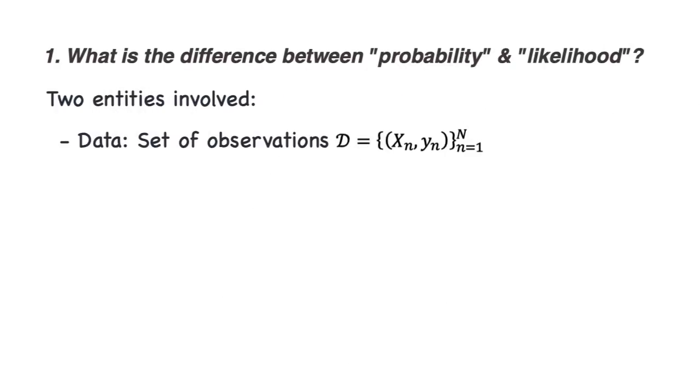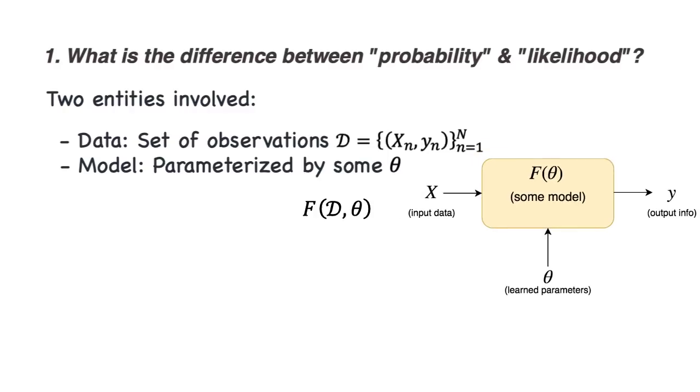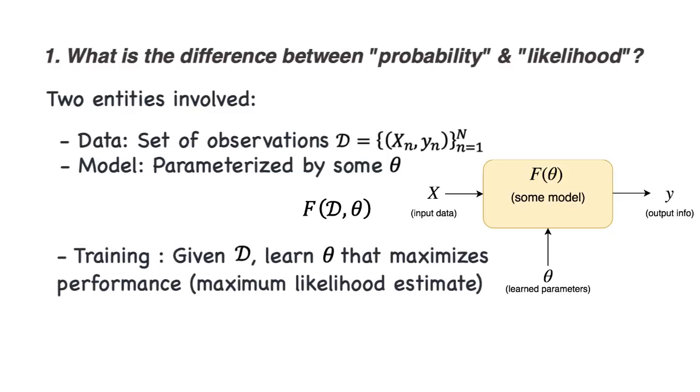The second entity is a model. This model performs some task, like the email classifier I just talked about. It's parameterized by some theta. Let's say these two entities are connected by some function F. F is basically the model. And this model has two phases, a training phase and a testing phase. During the training phase, you don't know theta. But you're given some training data D. So this is like we have a bunch of emails and we also have their labels, spam and not spam. We use this training data to learn the parameters of our classifier, that is, learn theta.